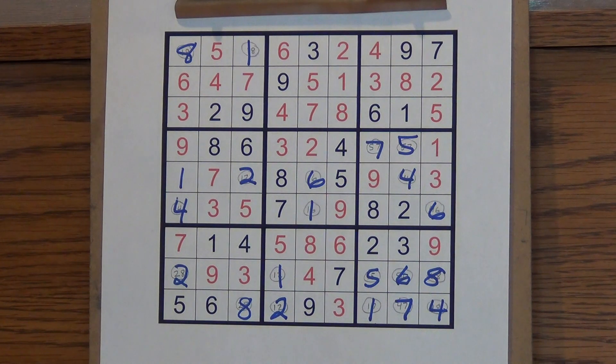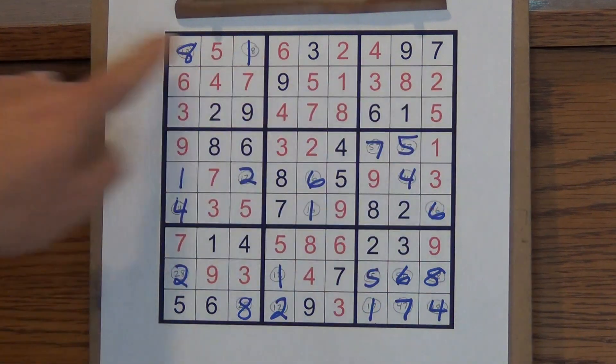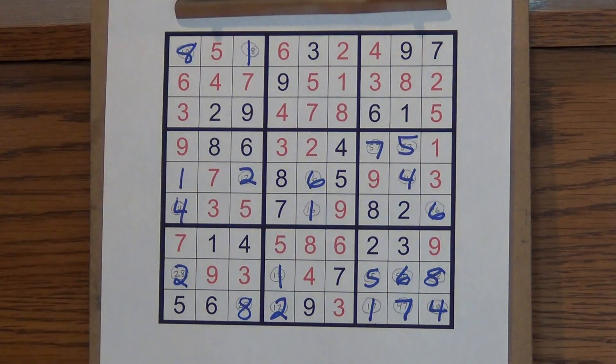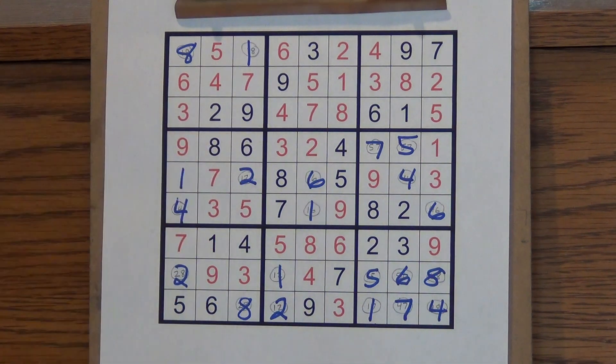I've already checked it. It checks out. You can go ahead and pause it and check if you want to make sure. But there is a one through nine in every row, there's a one through nine in every column, and there's a one through nine in every of the box of the main boxes.